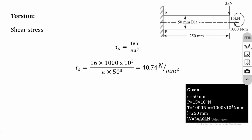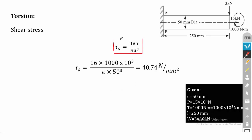Finally, the shear stress. The equation for a circular cross-section is τ = 16T / πD³. The torque is directly given as T = 1000 into 10³ Newton mm, so we don't need to calculate it from power as in the previous problem. Substituting T and the diameter gives τ = 40.74 Newton per mm square.